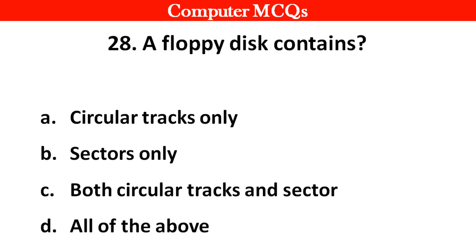A floppy disk contains: option A circular tracks only, B sectors only, C both circular tracks and sectors, D all of the above. Right answer is option C, both circular tracks and sectors.